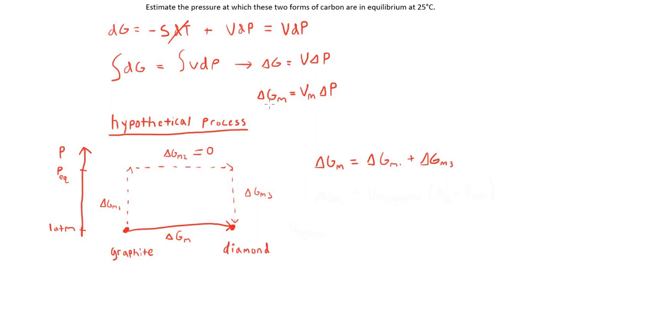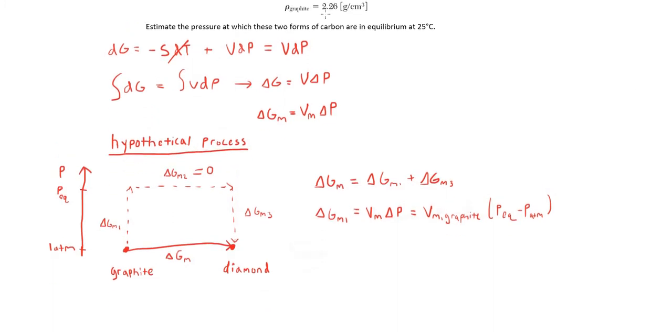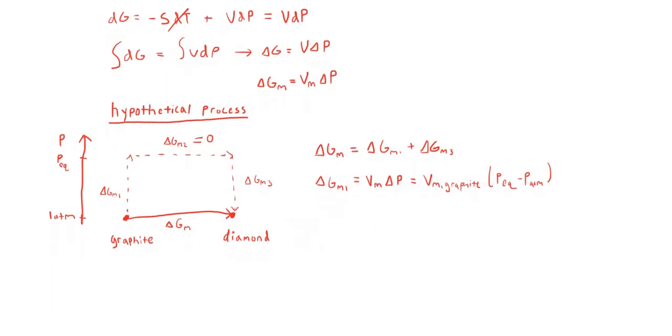Now using the expression we came up with earlier, I'm going to write the expressions for ΔG_m1 and ΔG_m3. In solving for G_m1, the molar volume that we use is the molar volume of graphite, since at this step there's only graphite present, and we're changing from one atmosphere to the equilibrium pressure, so ΔP is going to be P_eq minus P_atm. We don't know the molar volume of graphite, but we are given the density of graphite is 2.26 grams per centimeter cubed, so we can convert this density to a molar volume in meters cubed per mole. If you do the conversion, you'll get that the molar volume of graphite is 5.31 times 10 to the negative 6 meters cubed per mole.